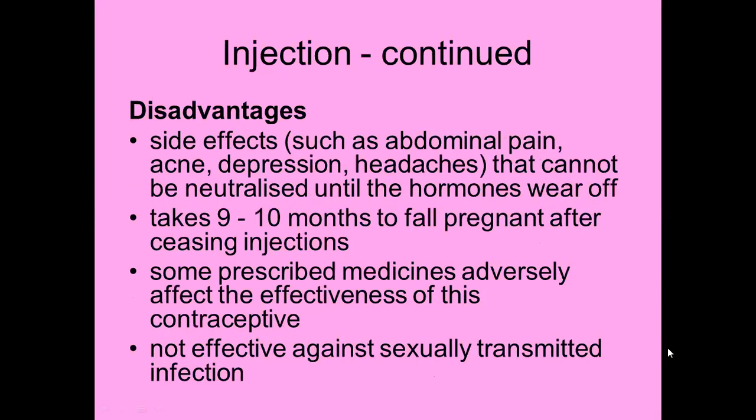Disadvantages: side effects such as abdominal pain, acne, depression, and headaches — and if a female has had the injection and starts experiencing side effects, nothing can be done until the hormone wears off, so for a six-month injection, that's six months of side effects. It is thought to take up to nine to ten months to fall pregnant after stopping the injections. Some prescribed medicines adversely affect the effectiveness of this contraceptive, and it's not effective against STIs.